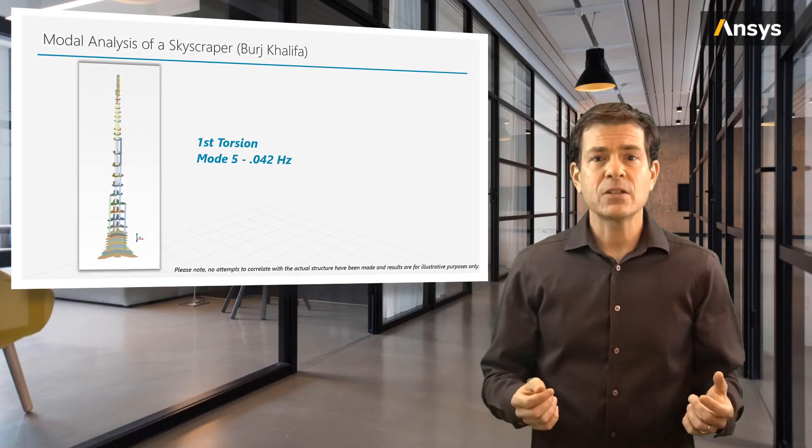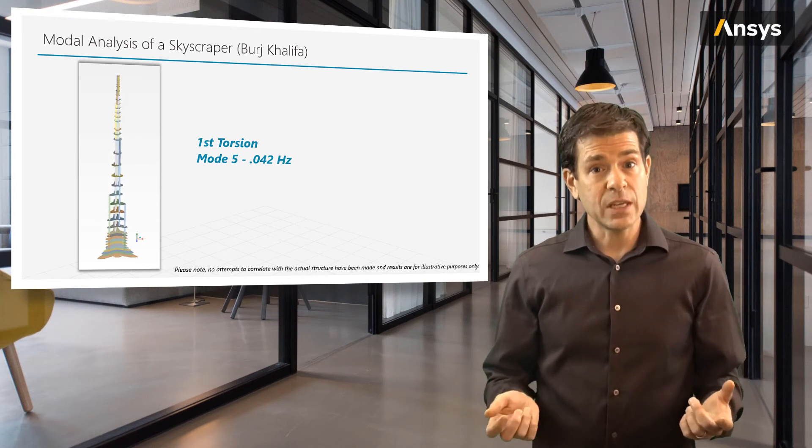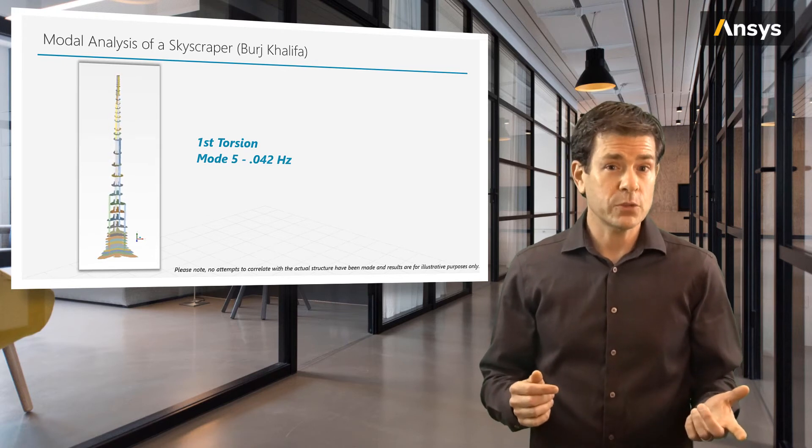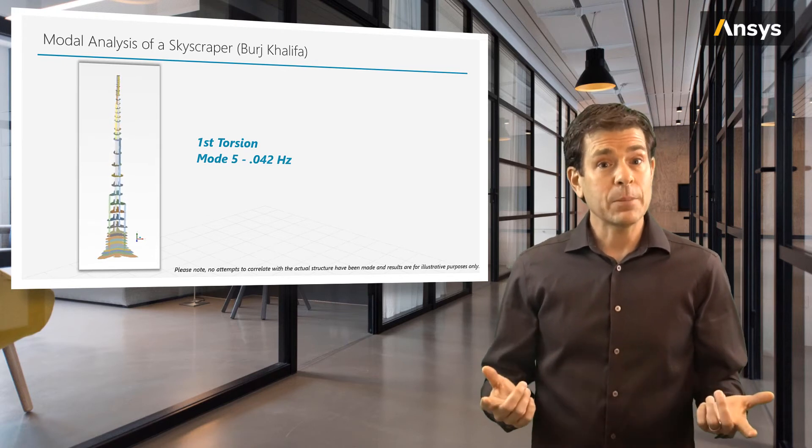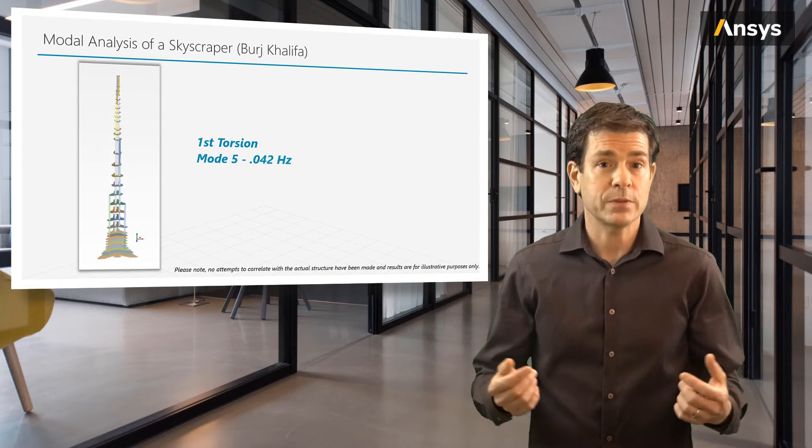So this brings us back to the significance of modal analysis to the design. The building must not only be stiff to minimize bending, it must be stiff torsionally to minimize rotation. And the aerodynamics of the building must be considered as to not excite this mode of deformation or any modes of deformation.